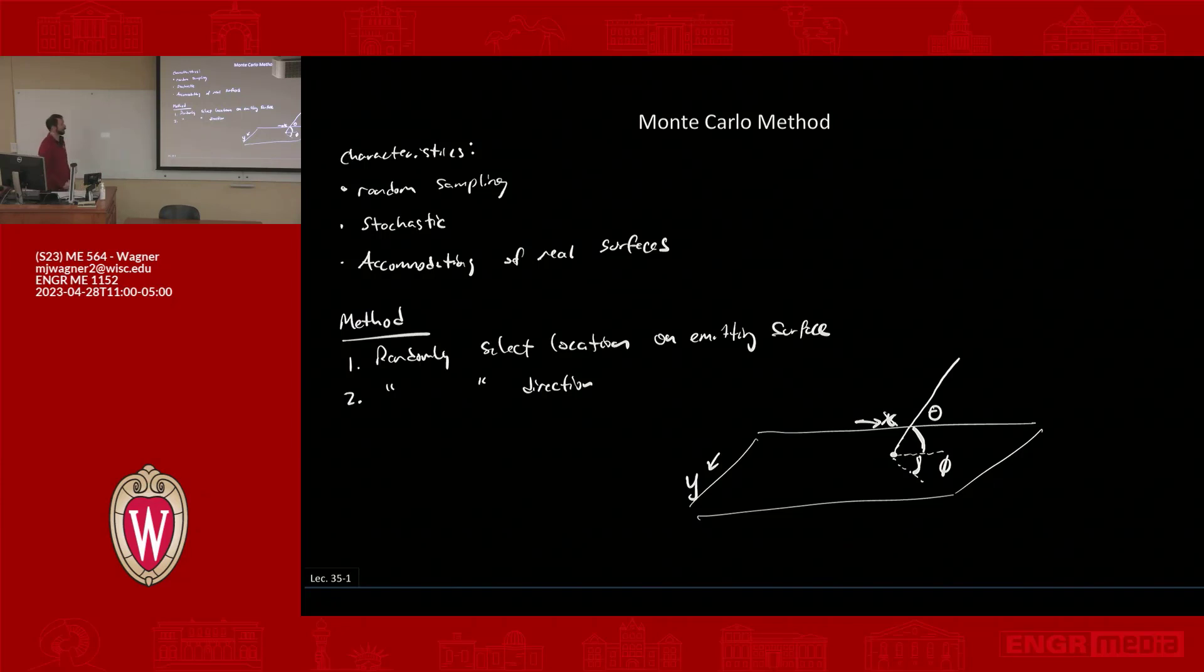We can call this angle on the ground phi, and we can call this elevation angle maybe theta. So I would have to pick a random theta and a random phi, and it'll emit off in that direction from that position.